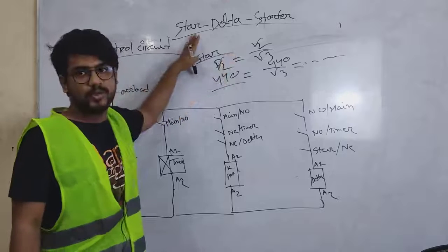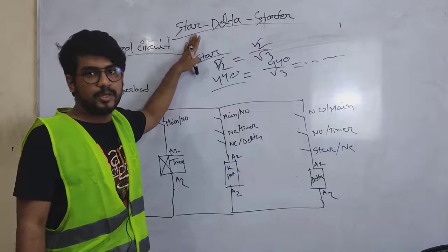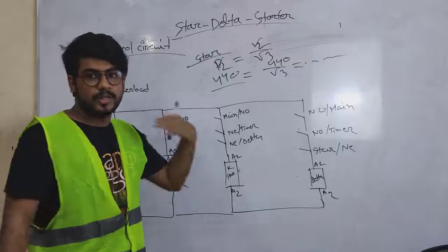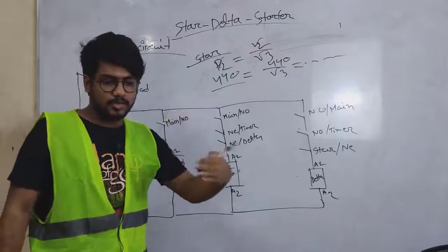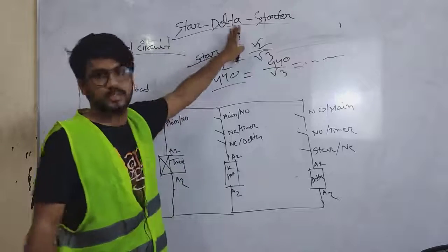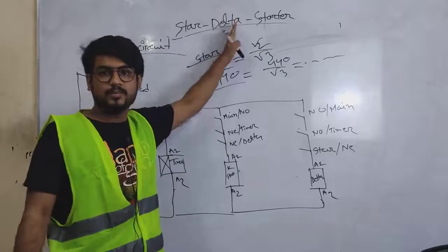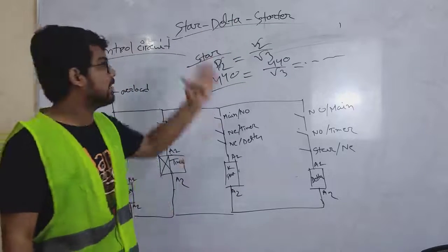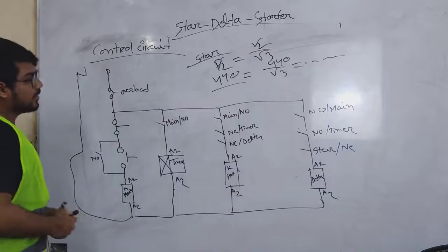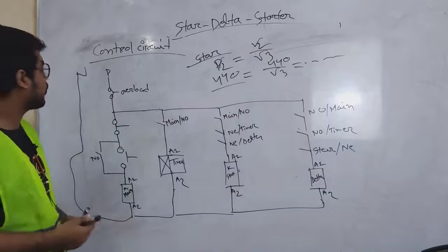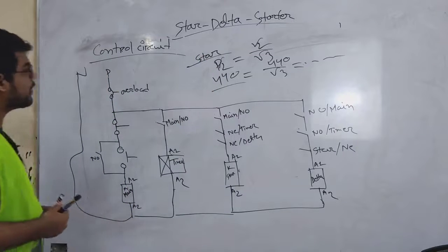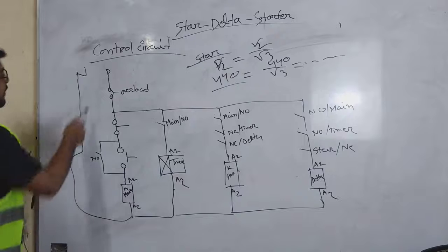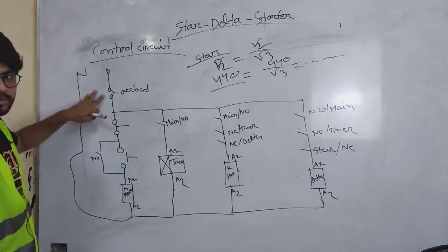When we start the motor, we start from the star connection at the normal position, then we shift to delta. We start the shift to save the voltage. So the control circuit uses a start button, then we start the phase and the overload connection.